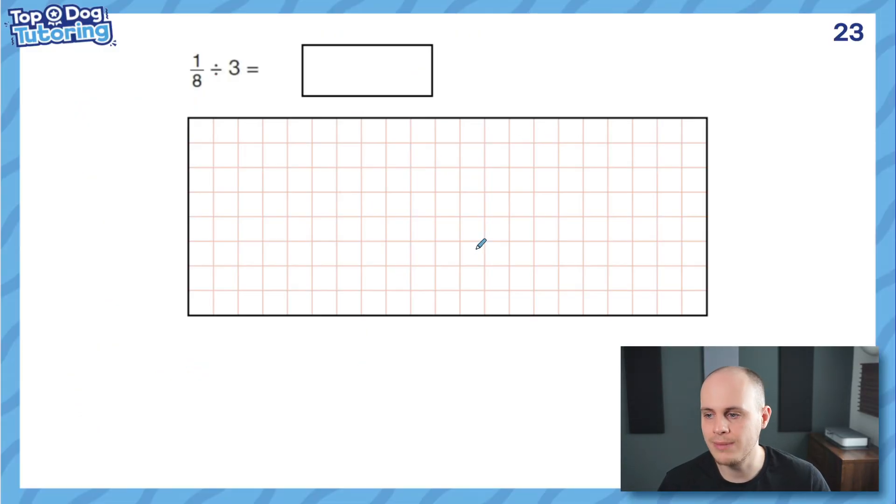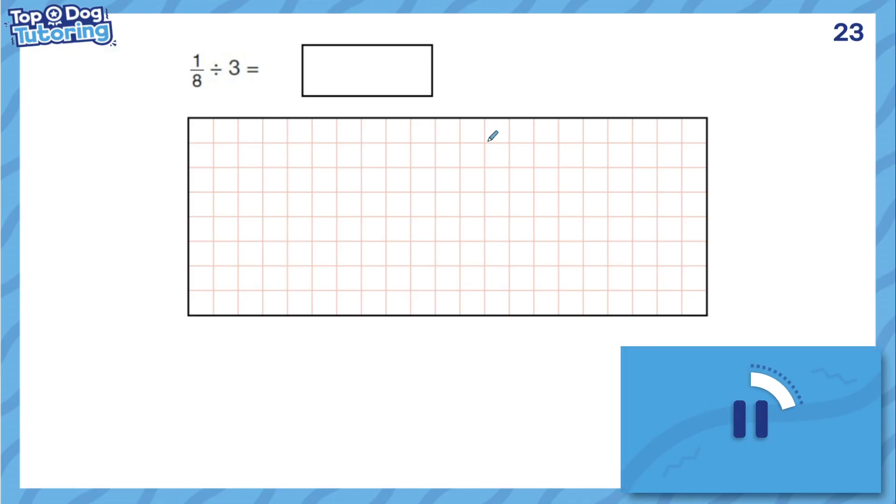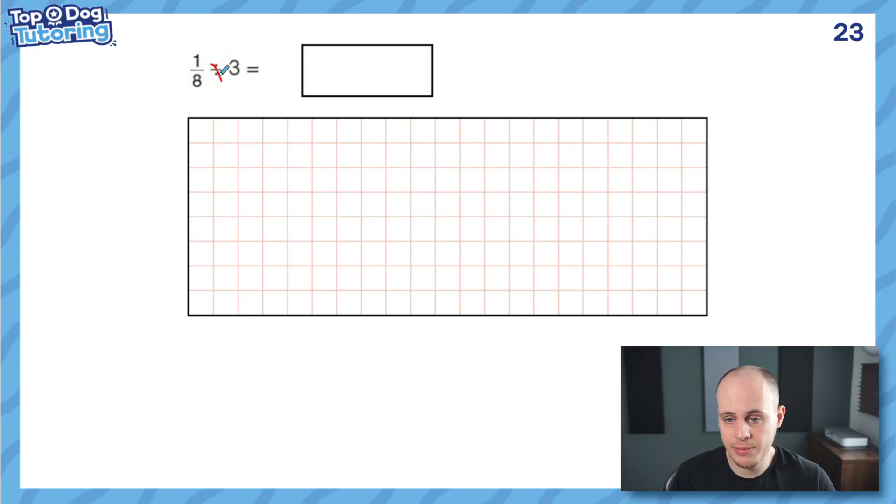Let's have a look. How has this come up in the SATs then? So in the 2023 paper, this was a question. One-eighth divided by three. Use the keep-change-flip method. Pause the video and what do you get? Let's do it. Keep-change-flip. So keep, change that, flip that. One times one is one. Eight times three is twenty-four. Done. Answer. Next one.